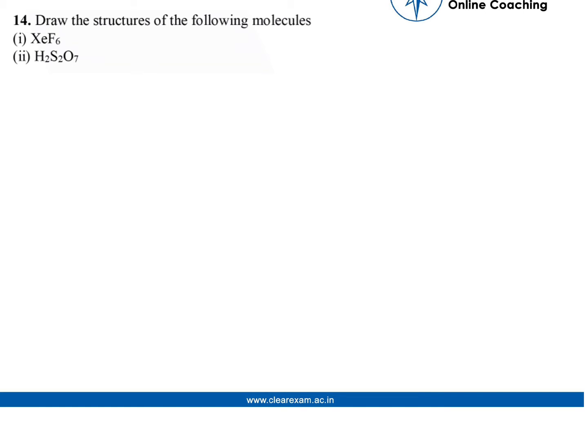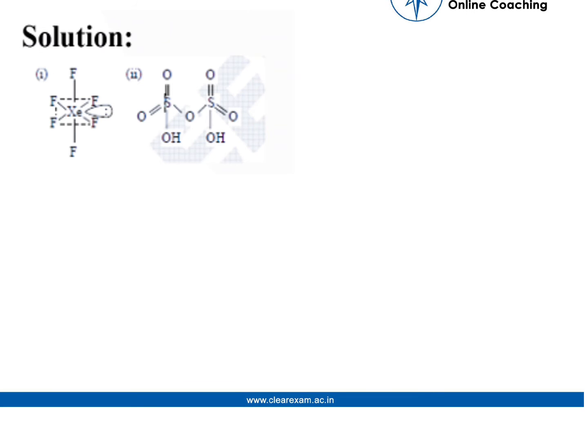Draw the structure of the following molecule XeF₆·H₂O₇. As we know that xenon has 8 valence electrons, so it will form a single bond with 6 fluorines and has a lone pair.